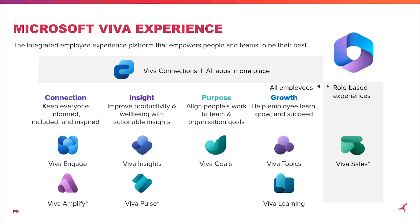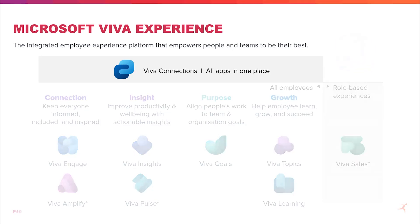There are all the different applications that serve different purposes — things like building communication platforms, having Viva Engage which is a social network for your organization, right through to insights where well-being is being considered, through to learning and topics — building knowledge management centers and learning platforms for people to continue their development. I can't talk about them in too much detail because there are other webinars coming up. But today's presentation will be all about Viva Connections, which really is the gateway to your modern intranet — the thing that ties all of this together.